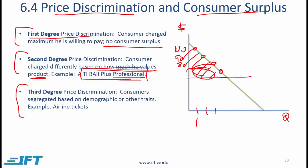Third degree price discrimination is where consumers are segregated based on demographics or other traits. For example, airlines have determined that business travelers are willing to pay more than leisure travelers, so business travelers are charged more. Similarly, econometrics or regression software student packages cost less relative to professional packages, and student packages have more limited data processing capabilities. These are examples of third degree price discrimination.